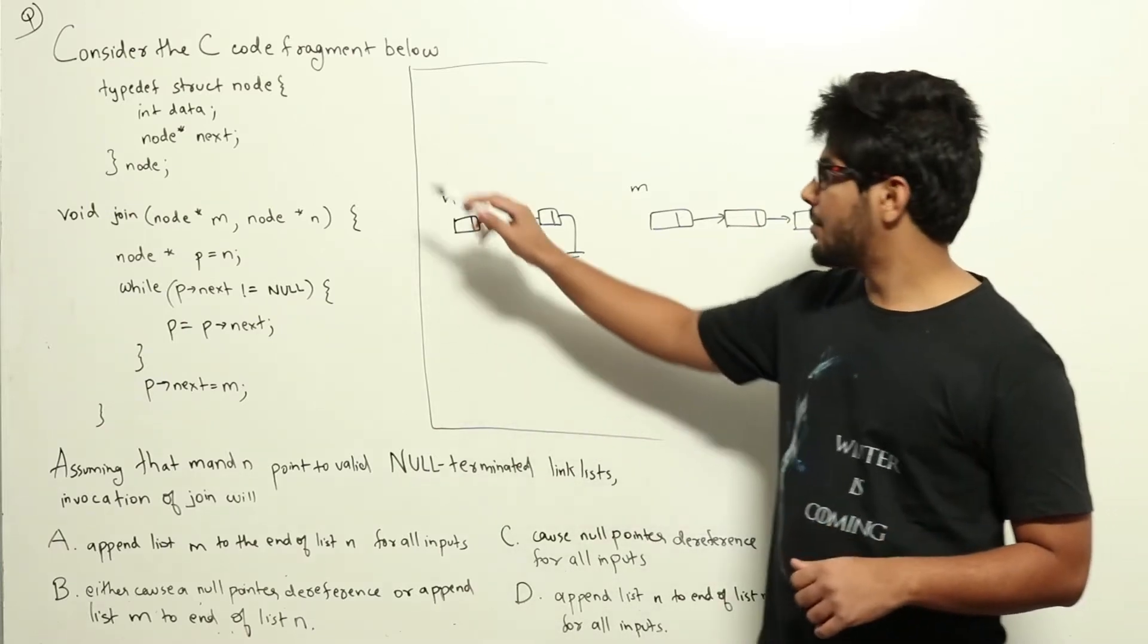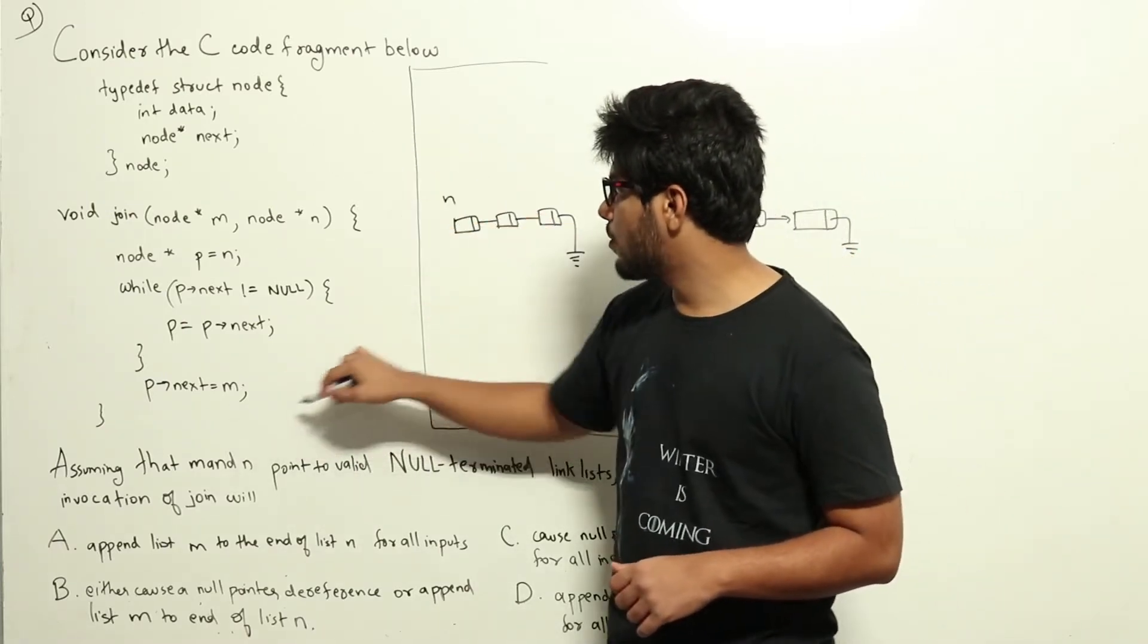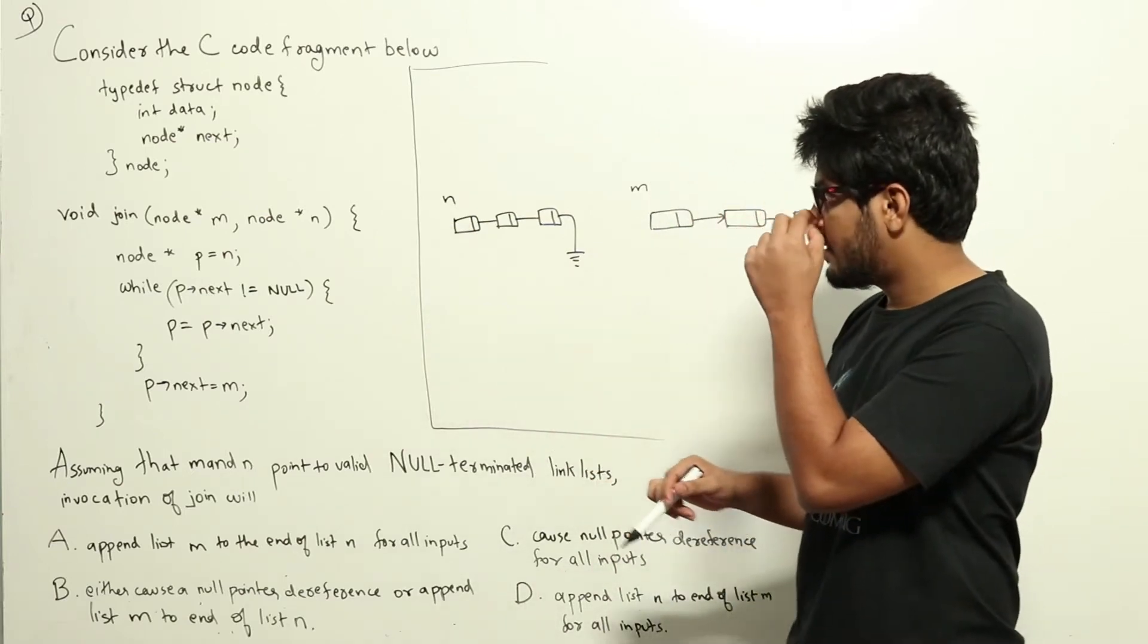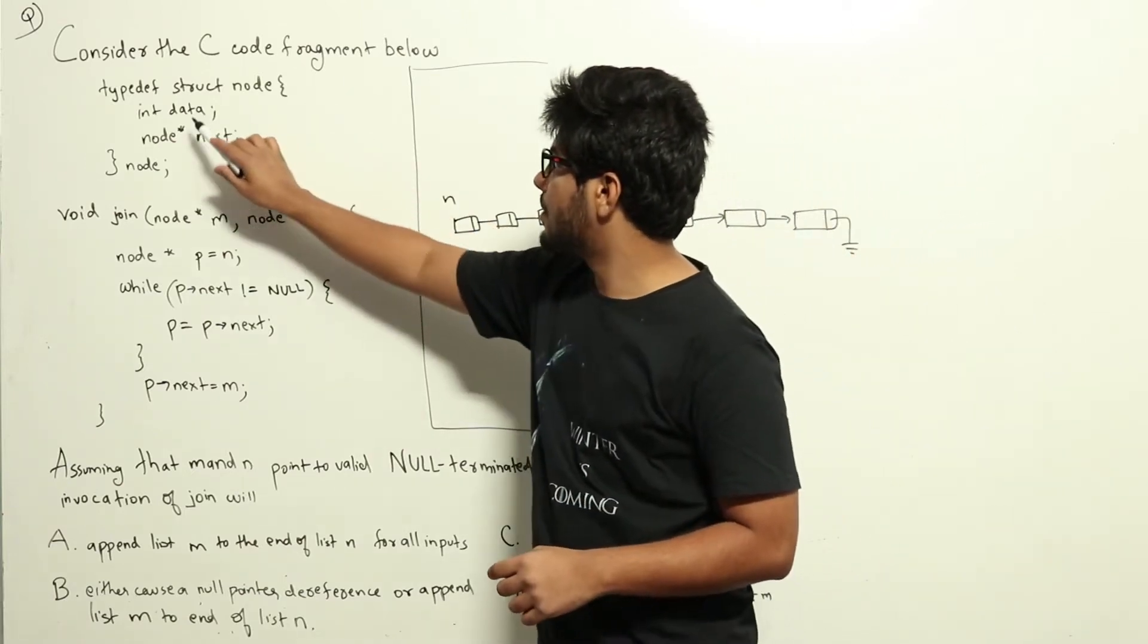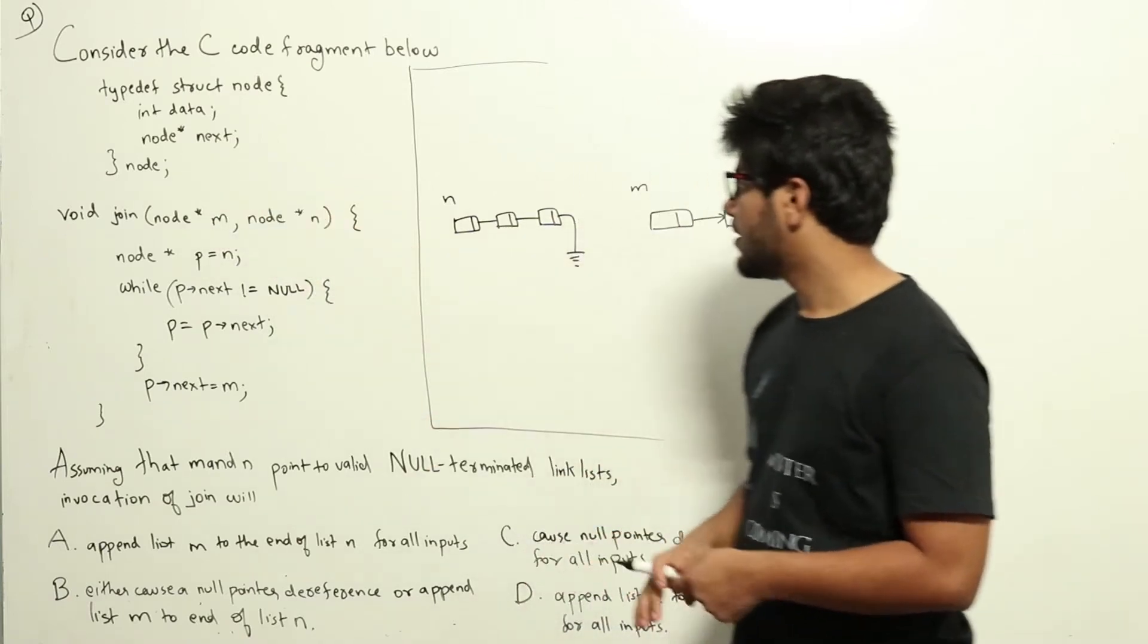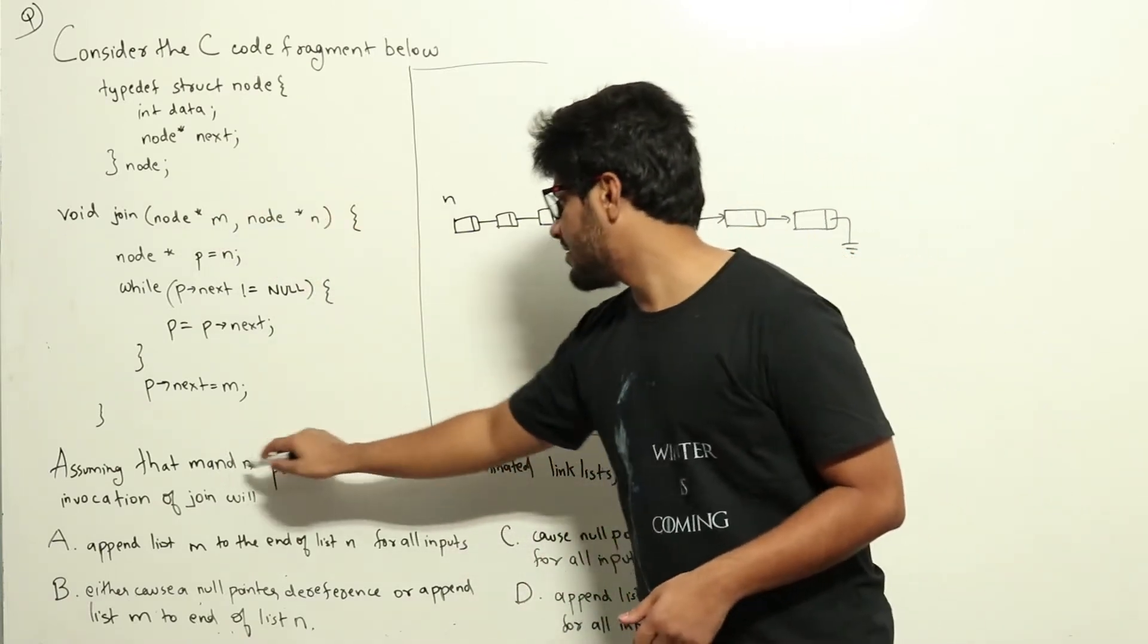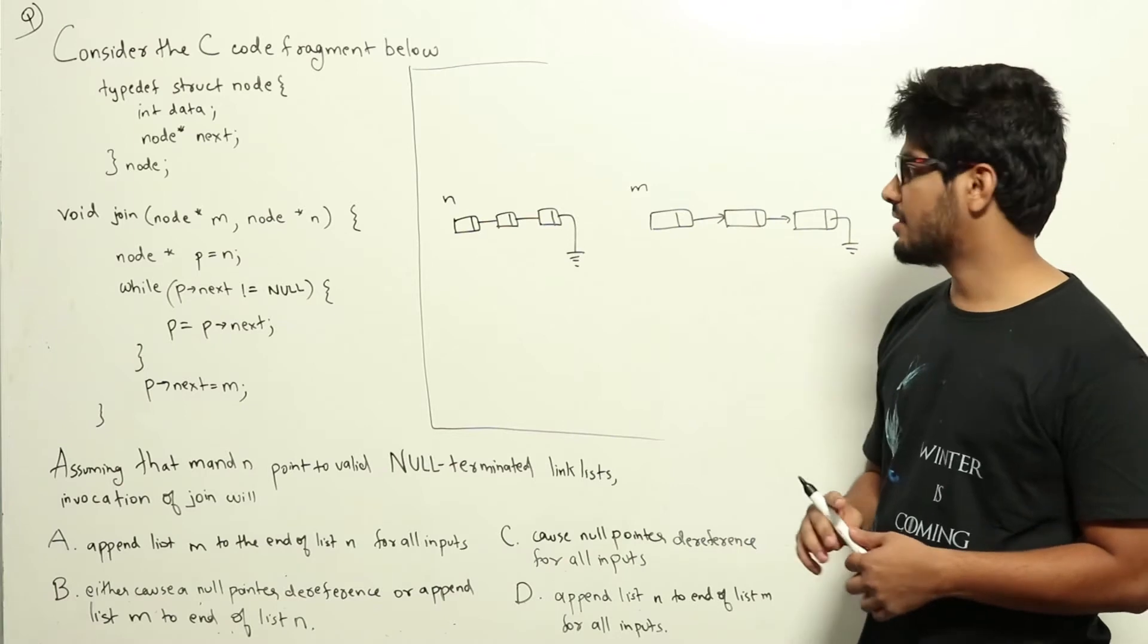We have been given this particular code for join. This is the struct that we are using. It has a data part and the next pointer pointing to the same node. And they have given us that M and N point to valid null terminated link lists.